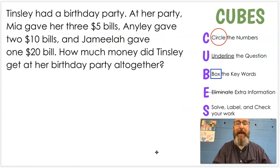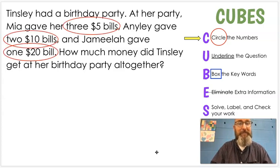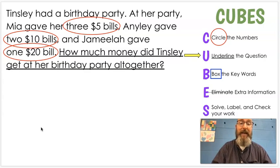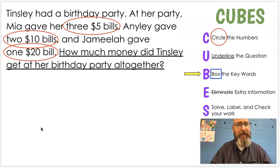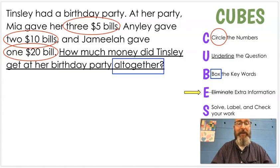Tinsley had a birthday party. At her party, Mia gave her three $5 bills, Annalie gave her two $10 bills, and Jamila gave her one $20 bill. How much money did Tinsley get at her birthday party altogether? First step — circle the numbers: three $5 bills, two $10 bills, and one $20 bill. Next, U — underline the question: how much money did Tinsley get at her birthday party altogether? Next, B — box the keywords. The keyword is 'altogether,' and we know from our chart that altogether goes with addition, so we're going to be adding all these numbers together.